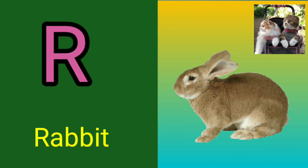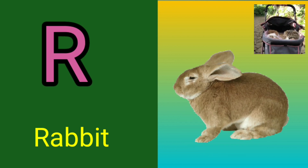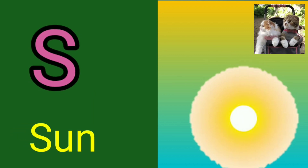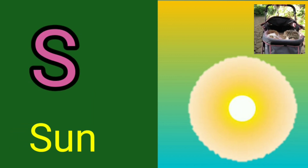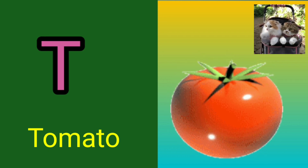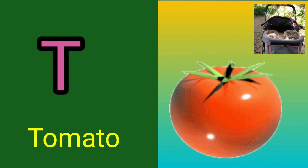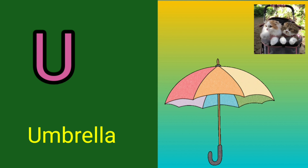R for rabbit, S for sun, T for tomato, U for umbrella.